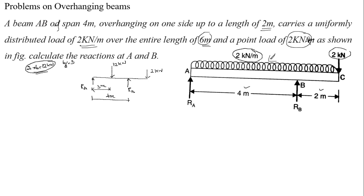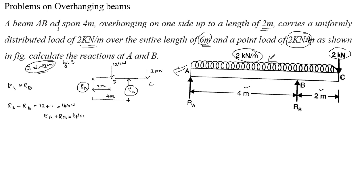Now we calculate reaction forces RA and RB. The UDL has been converted to a 12 kilo Newton point load. Framing the equation: sum of upward forces equals sum of downward forces. Upward forces: RA and RB. Downward forces: 12 kilo Newton plus 2 kilo Newton equals 14 kilo Newton. So RA plus RB equals 14 kilo Newton. This is equation 1.